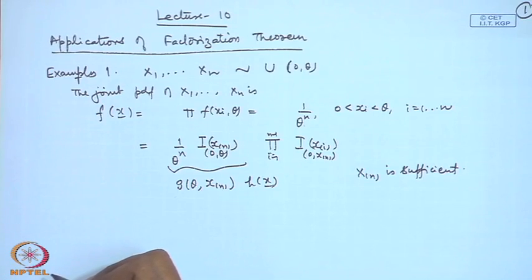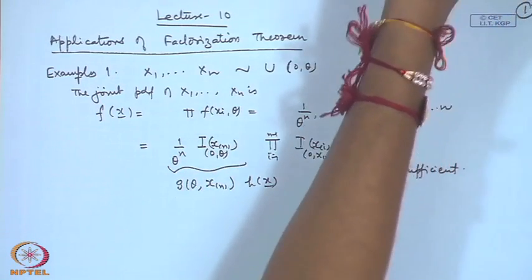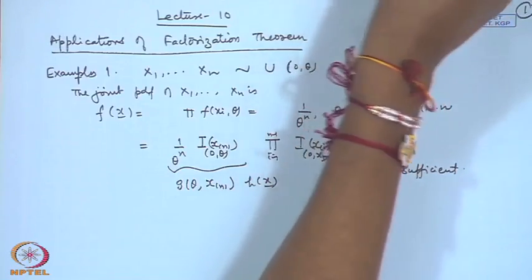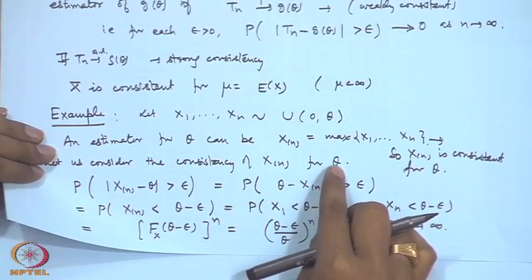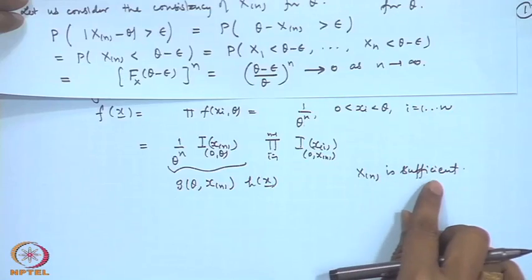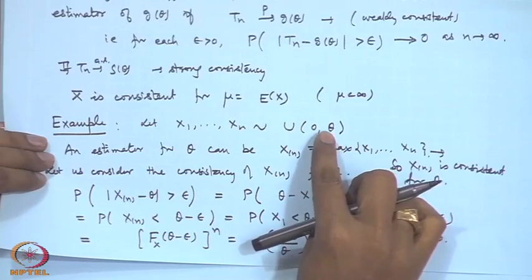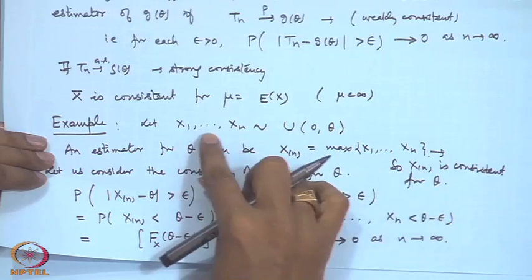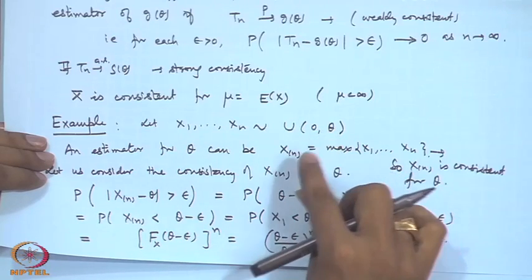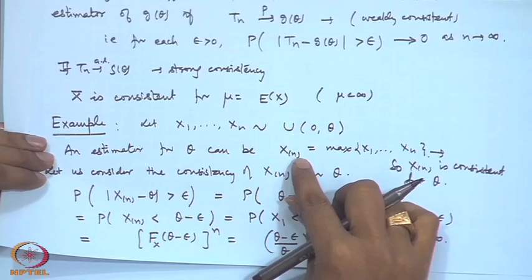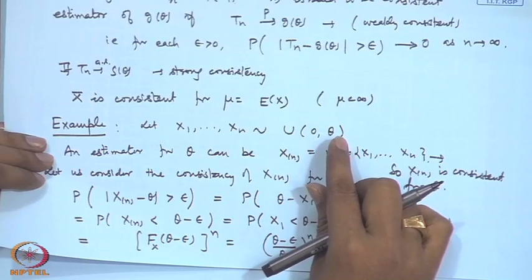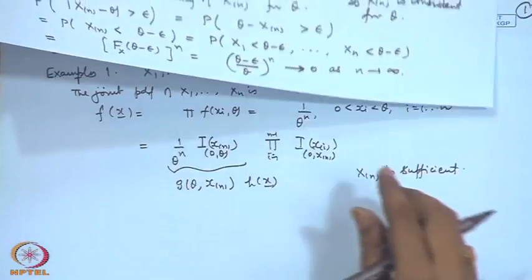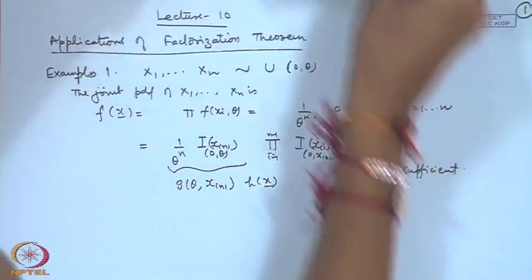Recall that x₍ₙ₎ was shown to be consistent for θ, and now we see it is also sufficient. In the uniform distribution, θ/2 is the mean, so x̄ is unbiased but is not based on x₍ₙ₎. Therefore, we can construct another estimator based on x₍ₙ₎ whose variance will be smaller than that of 2x̄.